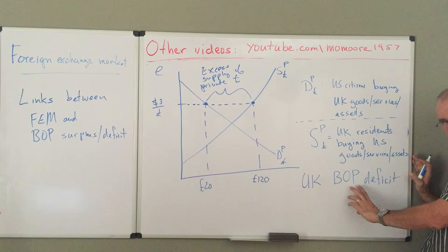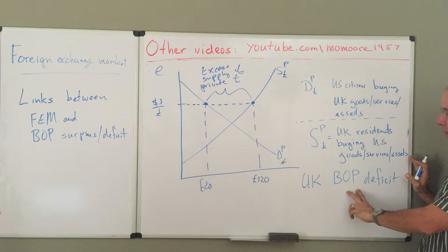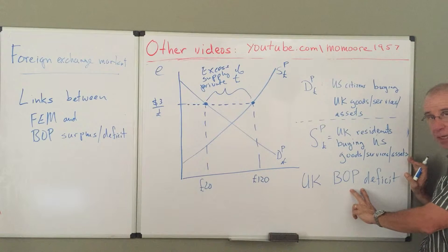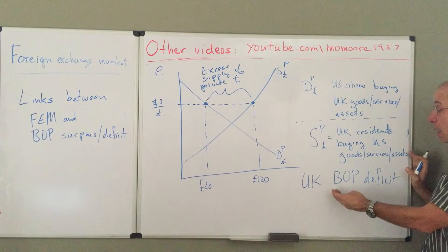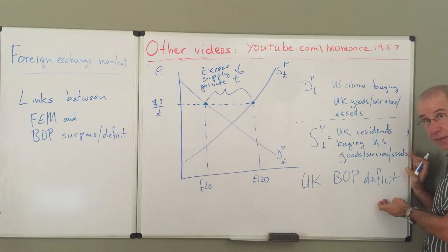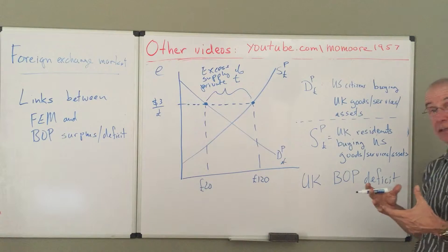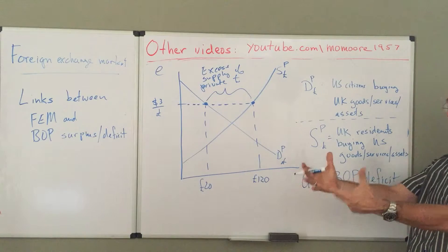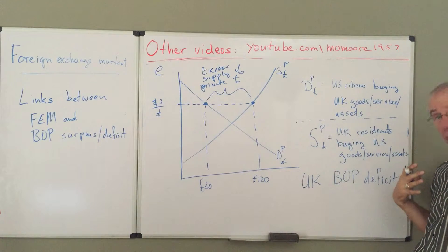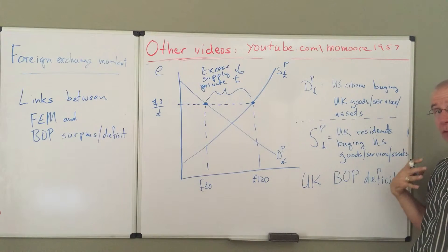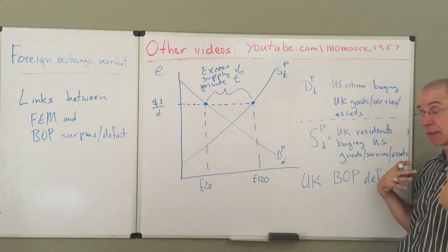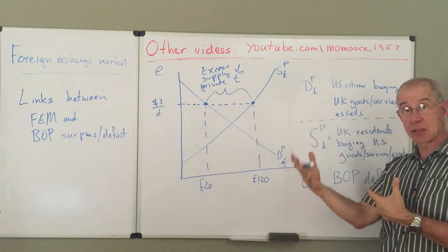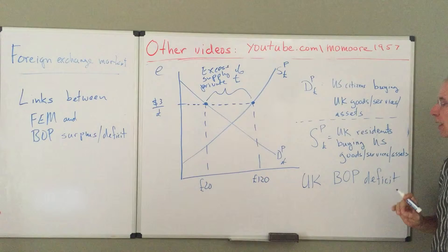You need to recall or review what we mean by balance of payments deficit — please look at some of the earlier videos. But the balance of payments deficit means that from the British standpoint, they're importing more goods, services, and assets. The total value of the goods, services, and assets imported exceeds the exports.